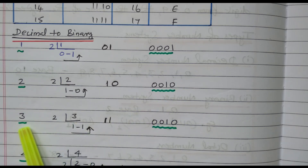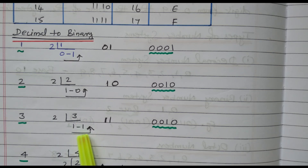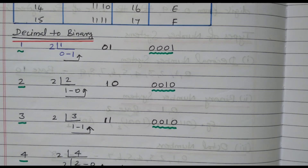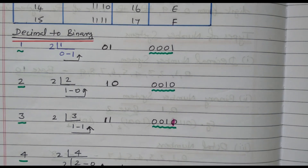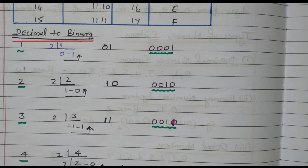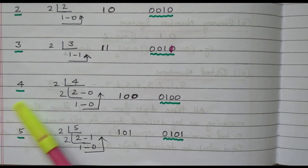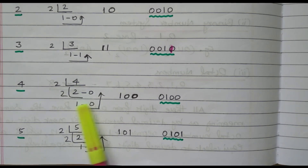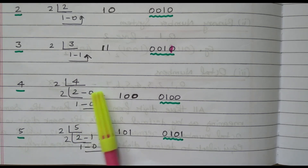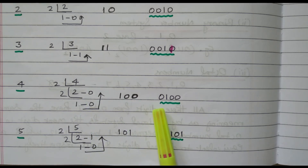For decimal 3, divide by 2: it goes 1 time with remainder 1. Writing in reverse order gives 11, so in 4 digits it is 0011. For decimal 4, divide by 2: it goes 2 times with remainder 0; again divide by 2: 1 time with remainder 0. Writing in reverse gives 100, so in 4 digits it is 0100. For decimal 5, divide by 2: 2 times with remainder 1; again divide: 1 time with remainder 0. Writing in reverse gives 101, so in 4 digits it is 0101.